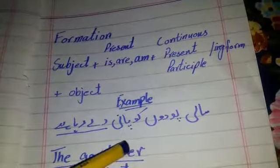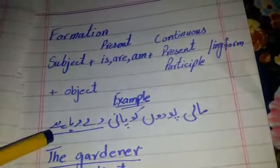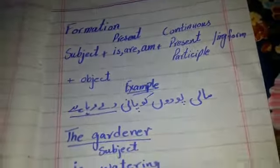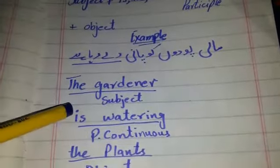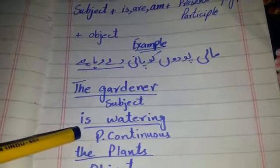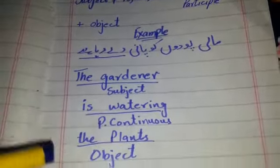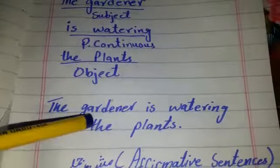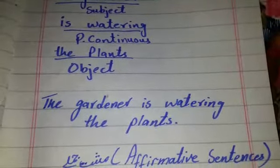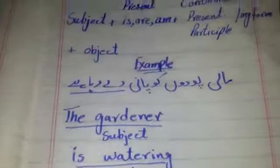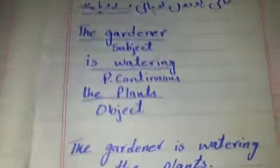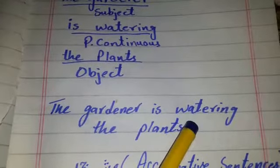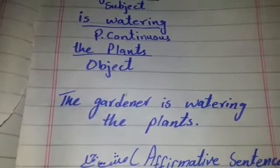For example: 'Maali paudhon ko paani de raha hai' — 'de raha hai,' indicating present continuous. The gardener — subject — is watering — present continuous ing form — the plants — object. The complete sentence is: 'The gardener is watering the plants.' That is an affirmative sentence of present continuous tense. We have subject, 'is' to indicate present, 'watering' to indicate continuous, and 'the plants' as the object.